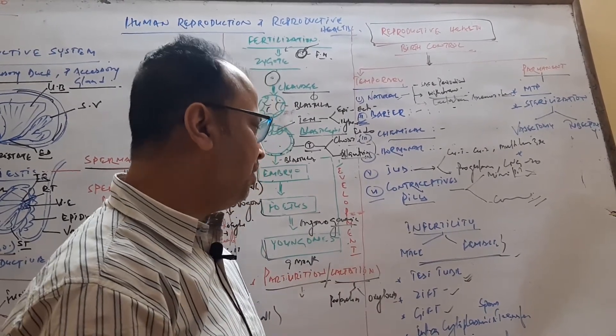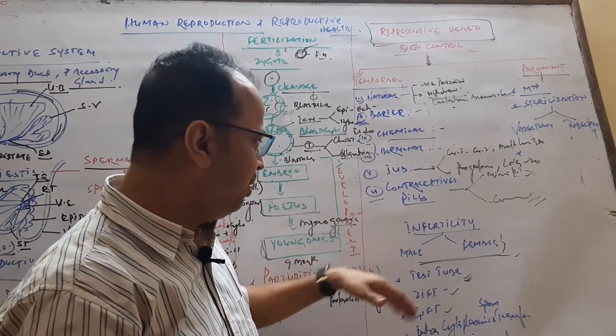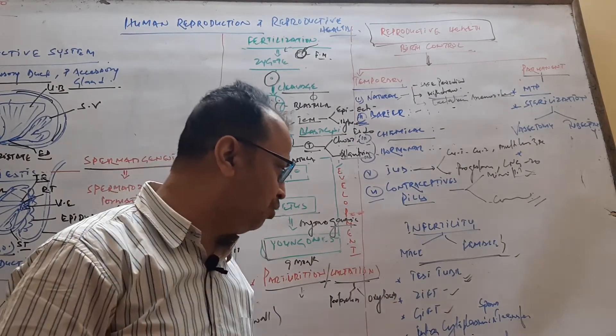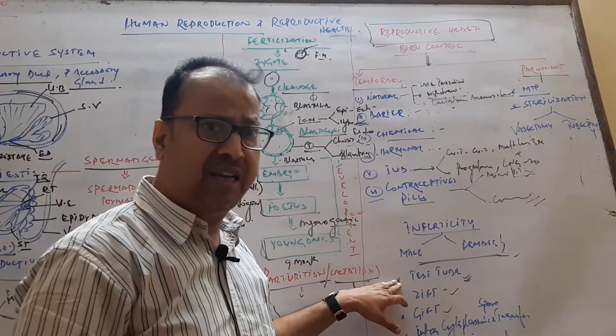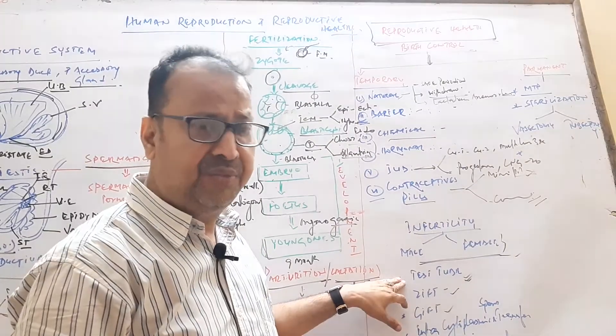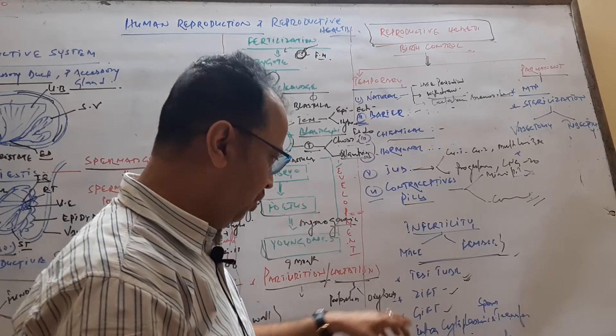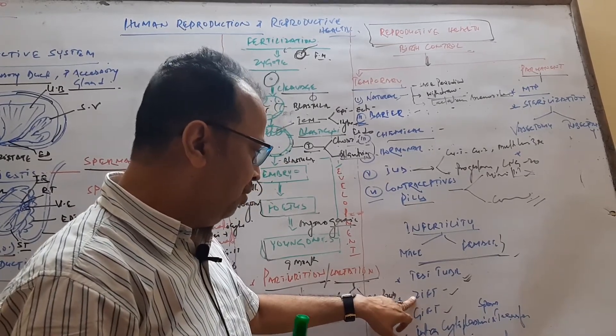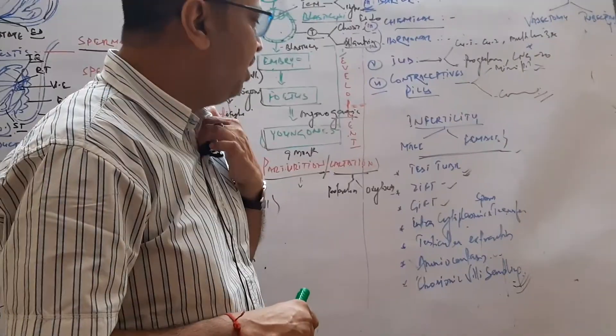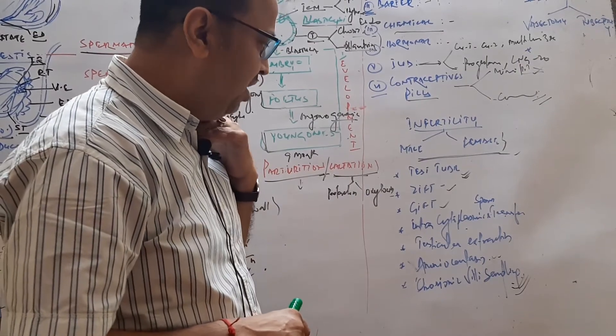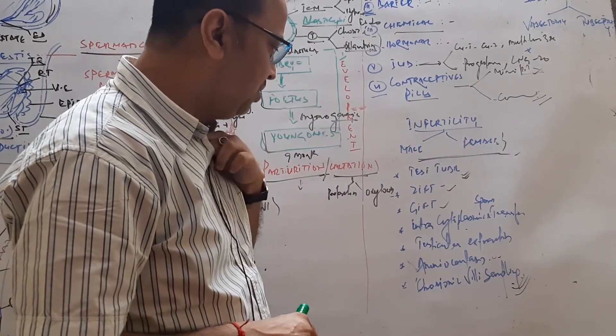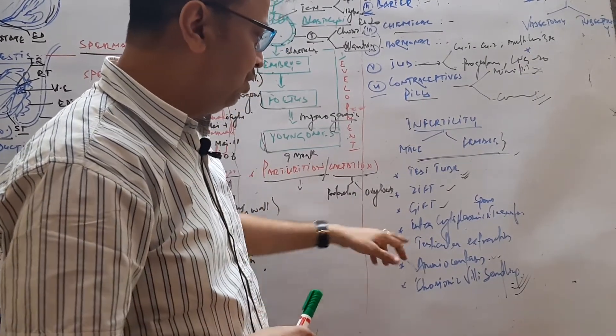Next is infertility in male and female. To remove the infertility condition, test tube baby or IVF is used, where fertilization occurs outside in a test tube and then it is reimplanted to the mother's womb. GIFT is gamete intrafallopian transfer, where only gametes are transferred to the fallopian tube. ZIFT is zygote intrafallopian transfer.